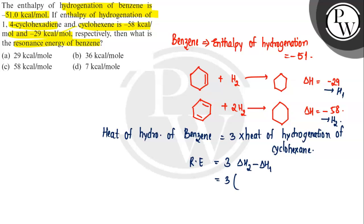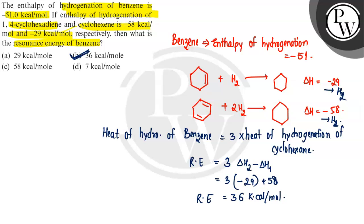H2 is minus 29 and H1 is minus 51. So the resonance energy = 3 × (−29) − (−51) = −87 + 51 = −36, giving 36 kcal per mole. The resonance energy of benzene is 36 kcal per mole — option B is the correct answer.